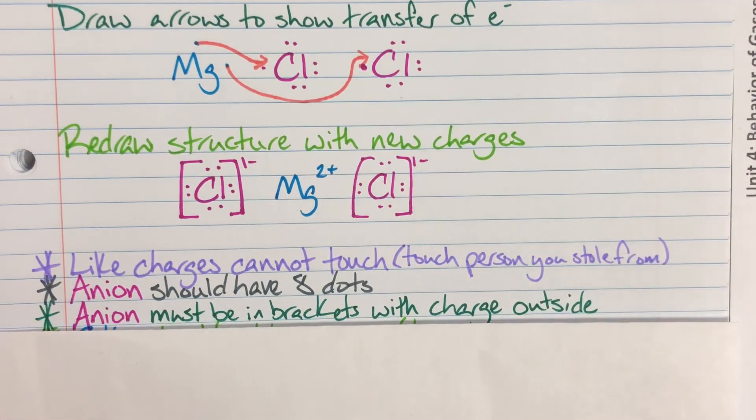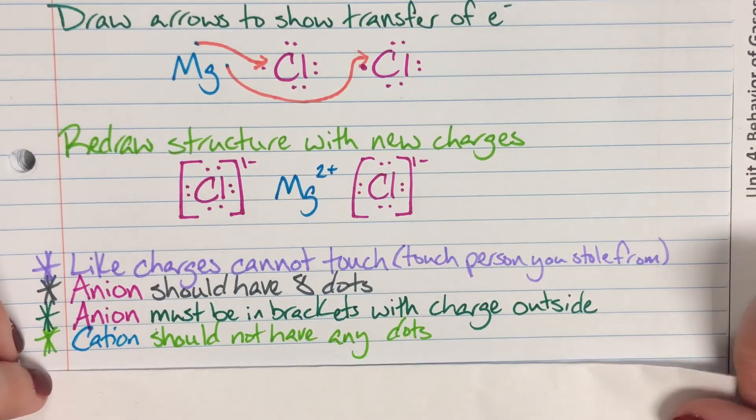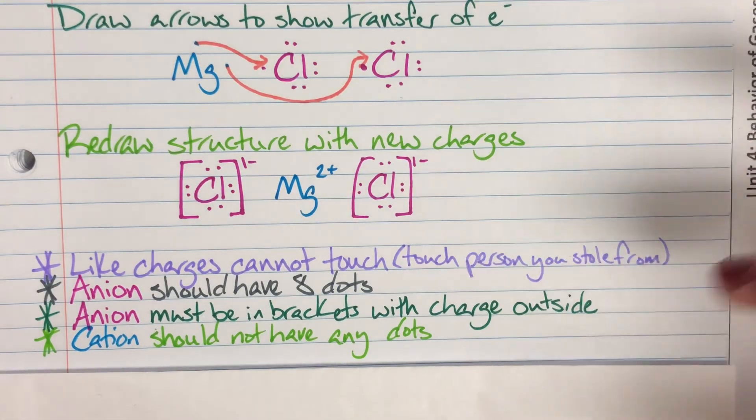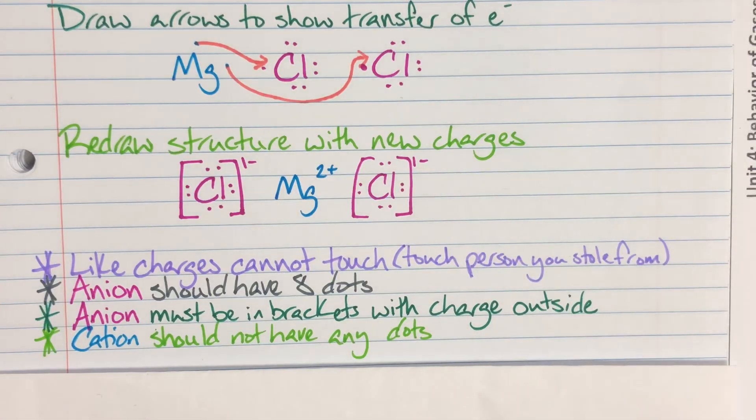My anion must also be in brackets with the charge outside of the brackets. It is a mandate, and then finally, in my final structure, my cation should not have any valence electrons left. The valence electrons were stolen. You cannot redraw something that is not there, but that's it for ionic Lewis.